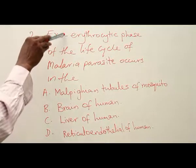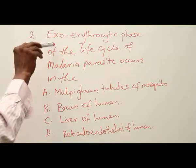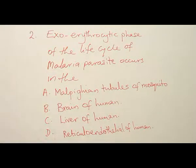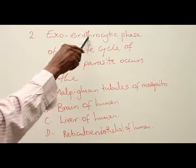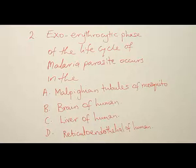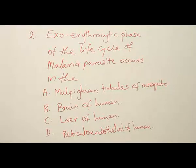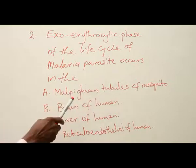The word 'exo' means outside, so exo-erythrocytic phase means outside the erythrocyte — that is, outside the red blood cell. This is the phase of the malaria parasite Plasmodium outside the red blood cell. After being injected into a person's blood, Plasmodium undergoes a series of developmental stages in the liver before returning to the blood and poisoning it through its toxins.